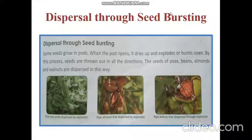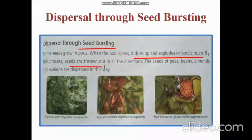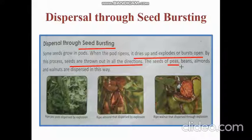Our last method of dispersal is dispersal through seed bursting. Some seeds grow in pods. When a pod ripens, it dries up and explodes or bursts open, and by this process seeds are thrown out in all directions. You must have seen peas at home — peas grow inside a pod, and once the pod is ripe, it dries up and the seeds inside explode or burst open. Other examples include beans, almond, and walnut, which are also dispersed in this way.